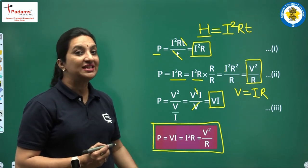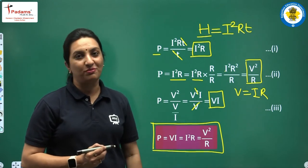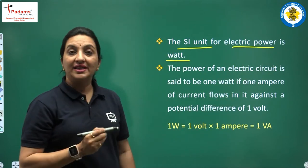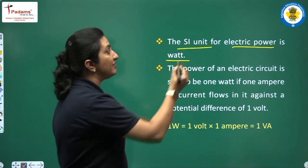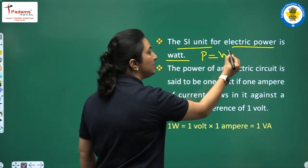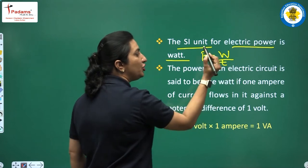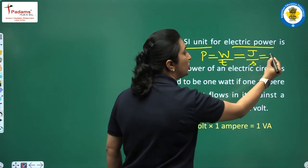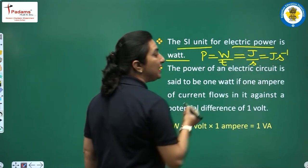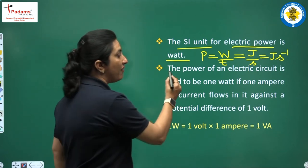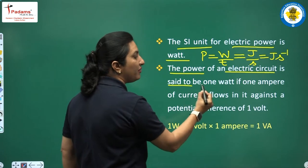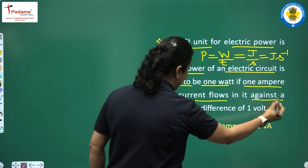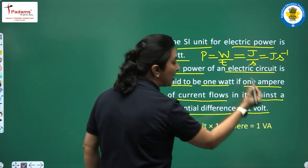Remember these three formulae — VI, I²R, and V²/R — as they will be used in numerical problems. The SI unit for electric power is joules per second, because power is work done per unit time, and the unit for work done is joules and the SI unit for time is seconds. Joule per second is called watt. The power of an electric circuit is said to be 1 watt if 1 ampere of current flows in it against a potential difference of 1 volt.